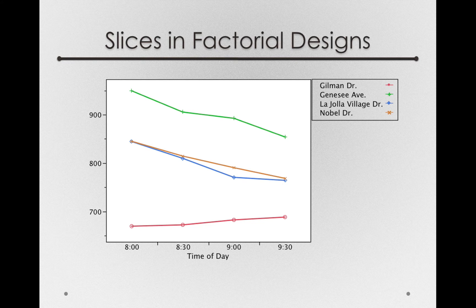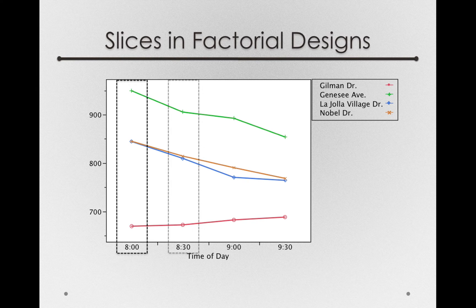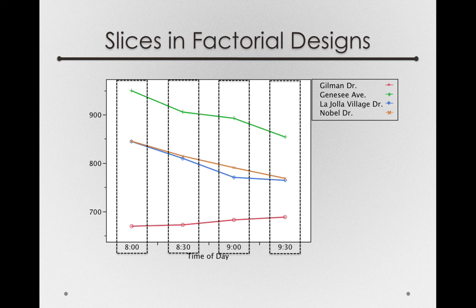Let's look at the different slices we could have. There are four slices that account for the different time-of-day effects — we can look at the time-of-day effect at just Gilman Drive, Nobel Drive, La Jolla Village Drive, or Genesee Drive. There are actually four additional slices: we could also look at the route effect at just one particular time — 8 o'clock, 8:30, 9 o'clock, and 9:30. So when we test slices, we get eight different tests, the eight different slices of our factorial design.